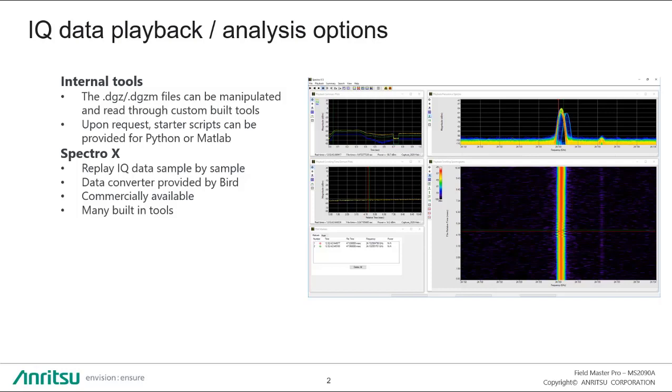First, with internal tools, our file format is given in our user guide. We come out in a DGZ and DGZM type file format. The DGZM is your metadata file, so anybody looking to process that data in a software package like Python or Matlab script can find all that information in our user guide. Upon request, we can even provide some starter scripts.